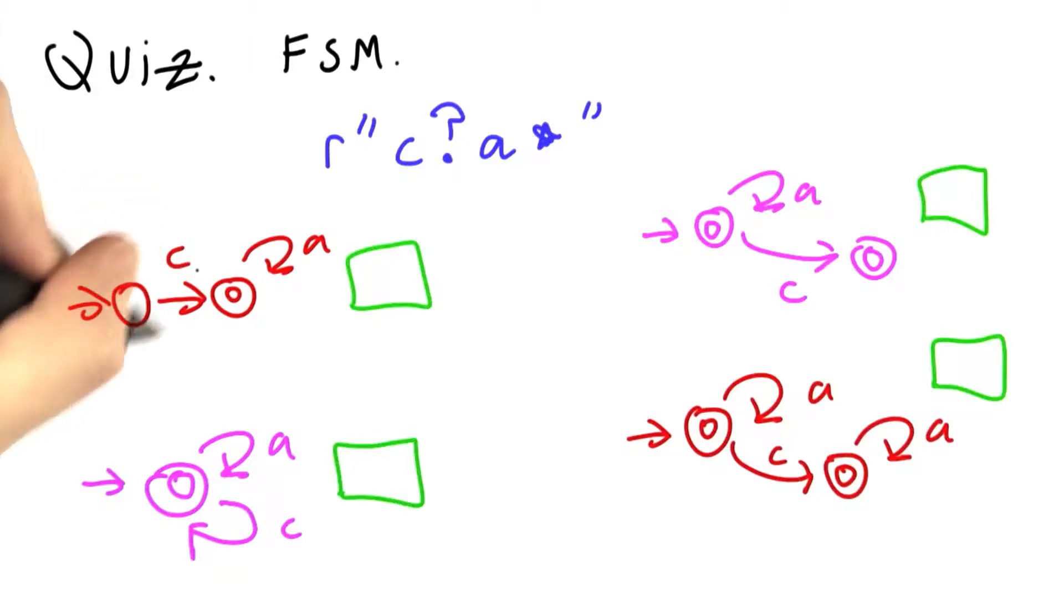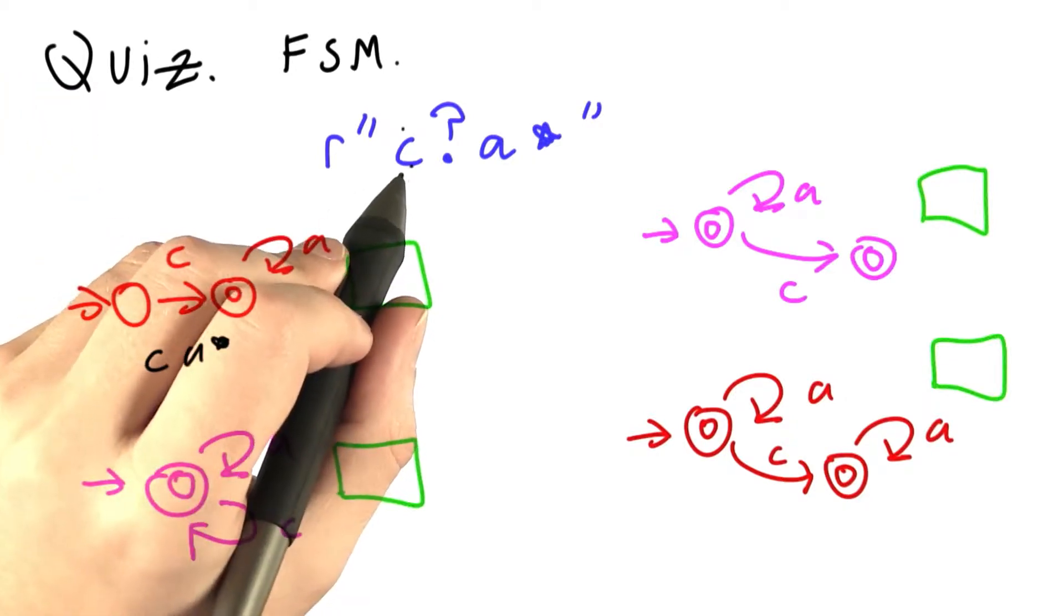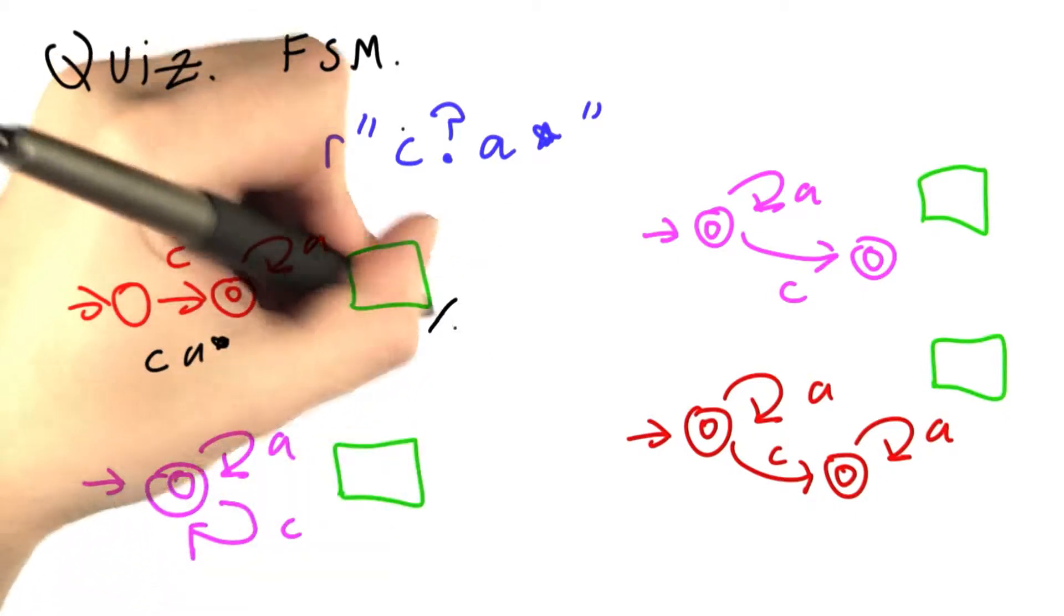Let's analyze them one by one. This requires at least one c, and then you can have 0 or more a's. This is c a star, and we're supposed to match optional c a star, so this isn't quite right.